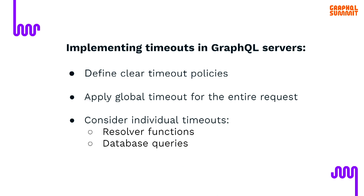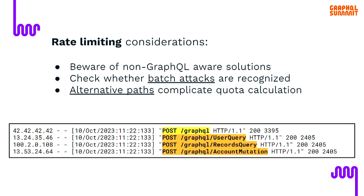For timeouts, the main approach is the same as protecting any other API service. You need to make sure that your timeout policies are clear, universal, and that they apply. There is a global timeout applied to entire requests, but there also might be granular controls on resolver and database level. The thing is, you might also be using some previously existing rate-limiting protection which might even look like it's working — but if you just plug in GraphQL and the tool is not aware of GraphQL, it will break. Quite often GraphQL requests look like they're just hitting one endpoint to non-GraphQL-aware tools, so the endpoint gets whitelisted because of so much traffic — there's no effective rate-limit protection.